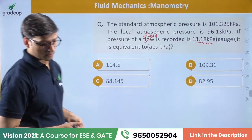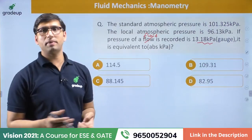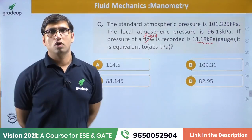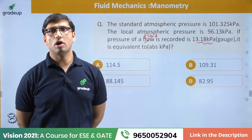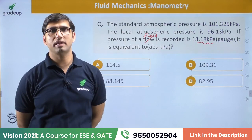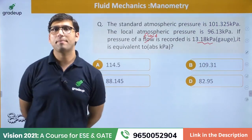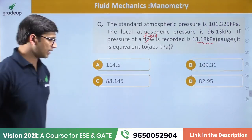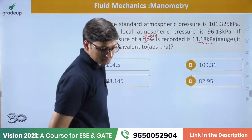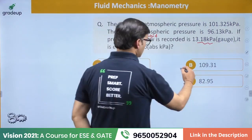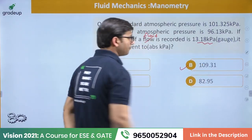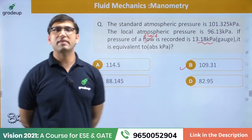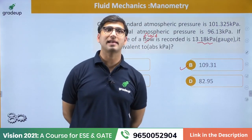Several students have given their answers: Ronald says option B, Rukul D says option B, Arun Kumar says option A, Avinash says 88.145, and Raj says 114. The right answer for this question is option B — 109.31 kilopascal. Absolute pressure = local atmospheric pressure + gauge pressure = 96.13 + 13.8 = 109.93 ≈ 109.31 kilopascal.